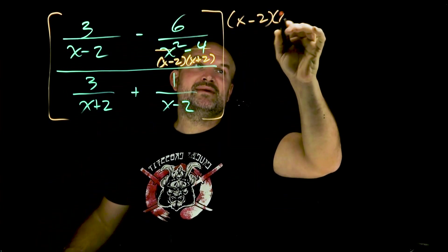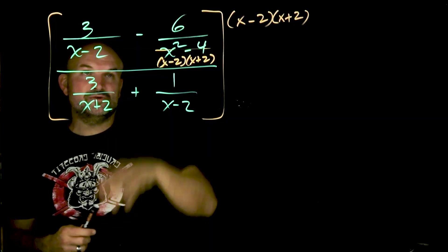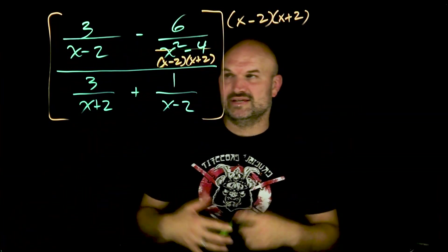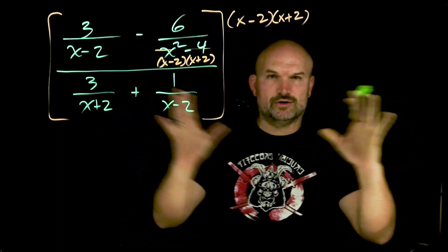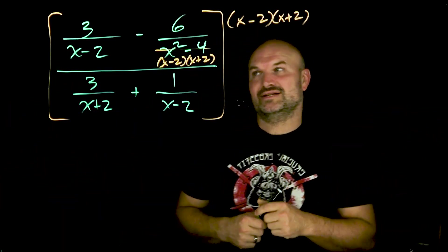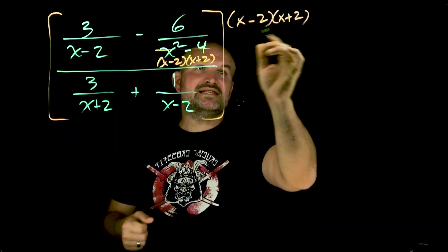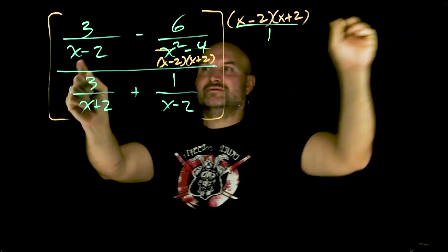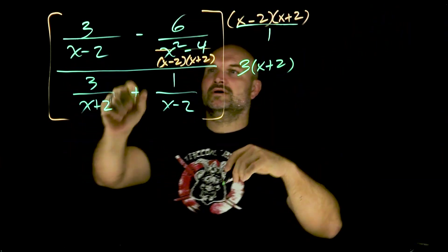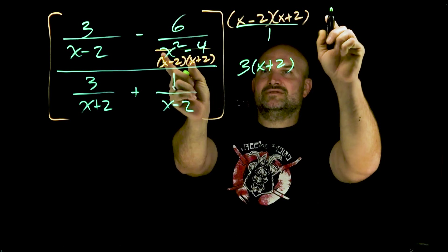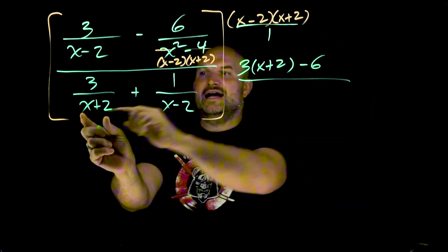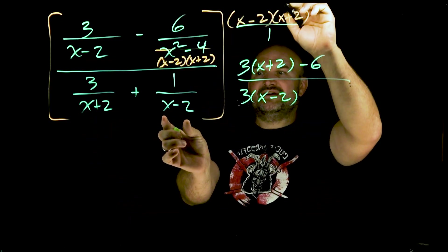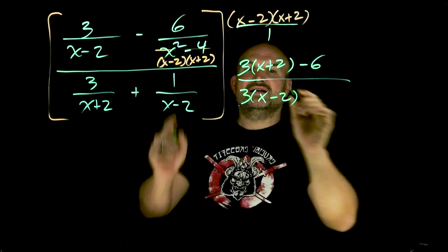Where a lot of students make their mistakes is going through this next step, especially when we have subtraction. So I always like to visualize it and sometimes write it out. If I multiply this — and you can always think about this as over 1 — my x minus 2s divide out, so I'm left with 3 times x plus 2. Over here, everything divides out, so I'm just left with negative 6. Over here, x plus 2s divide out, leaving me with 3 times x minus 2. Over here, my x minus 2s divide out, leaving me with 1 times x plus 2.